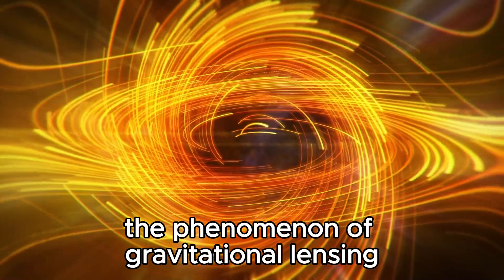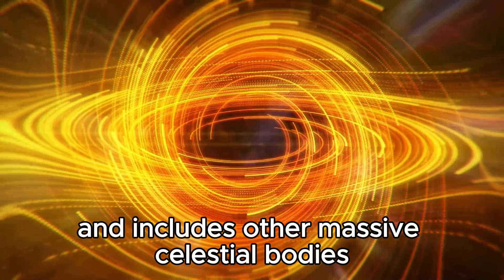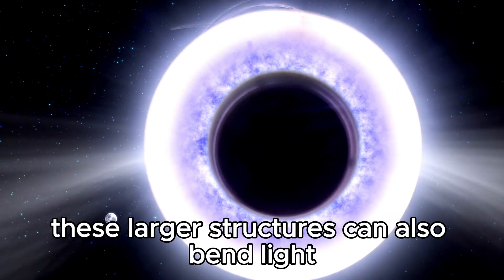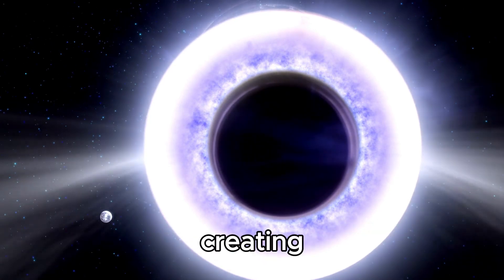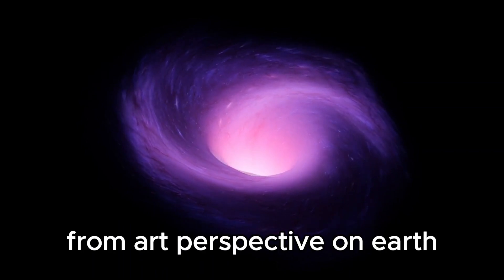The phenomenon of gravitational lensing extends beyond black holes and includes other massive celestial bodies like galaxies and clusters of galaxies. These larger structures can also bend light, creating arcs and multiple images of objects located behind them. From our perspective on Earth, this property of massive objects has been used to map the distribution of dark matter in the universe.